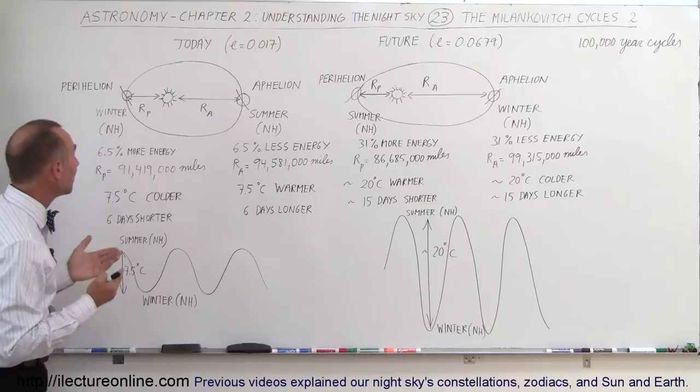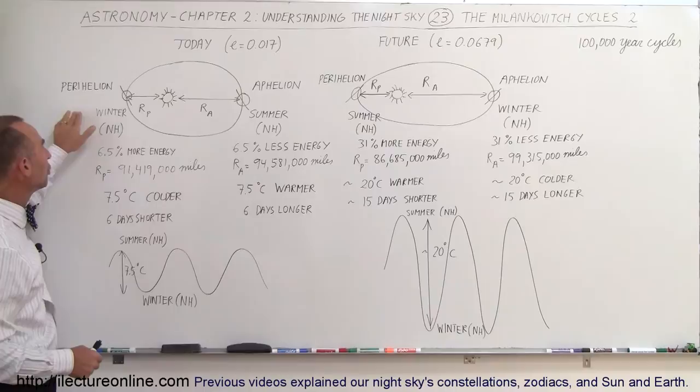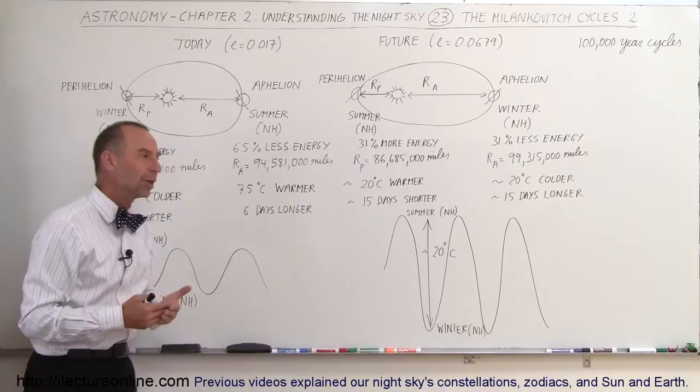So what that means currently: when the Earth is experiencing winter in the Northern Hemisphere, we're about 1.5 million miles closer than the average of 93 million miles. And when the Earth is experiencing summer in the Northern Hemisphere, we're about 1.5 million miles farther away from the Sun.